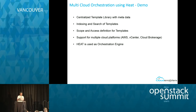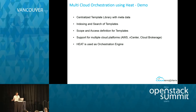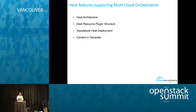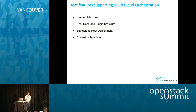To summarize the demo: we saw the centralized template library with metadata, how the template metadata can be indexed and searched, and how a template can be defined with multiple scopes and executed against different platforms. Now we will see how this is possible — how we can utilize existing HEAT features to extend the capability to orchestrate multiple clouds.